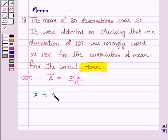X bar is the mean. Summation X is the sum of observations. And n is the number of observations.